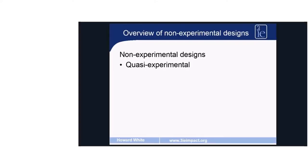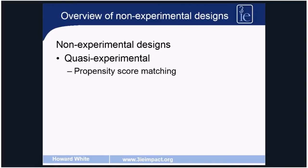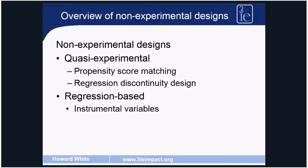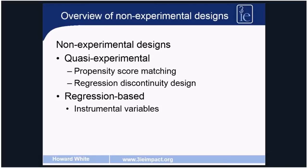Non-experimental designs can be divided into quasi-experimental designs, which attempt to create a comparison group in the same way you have a control group with randomized control trials. The first we'll talk about is propensity score matching, and the second is regression discontinuity design. The second type are regression-based approaches, of which we will talk about instrumental variables, or IV. Both PSM and RDD do use regressions, but PSM and RDD identify a comparison group and base the impact estimate on single or double difference estimates, whereas with IV you don't formally identify a comparison group, though you do require data from both treated and untreated observations.